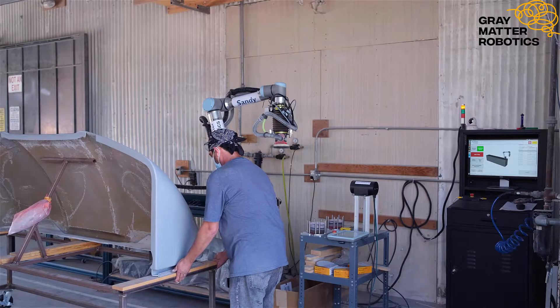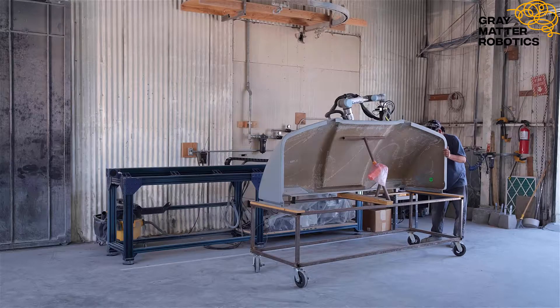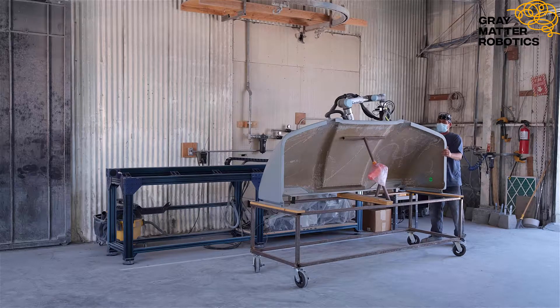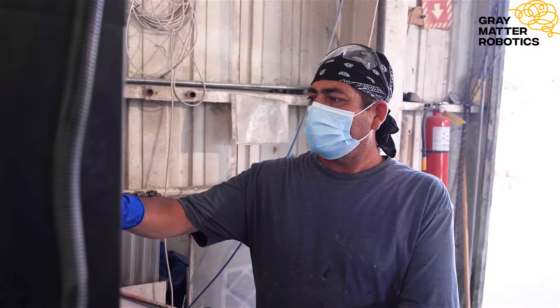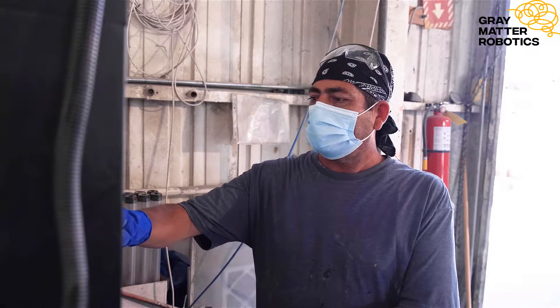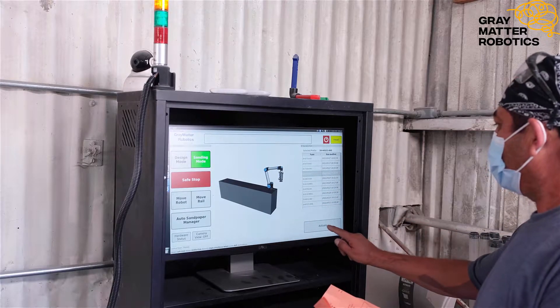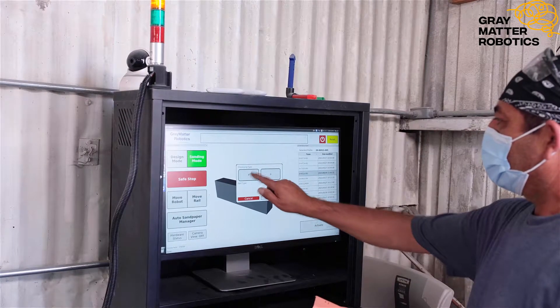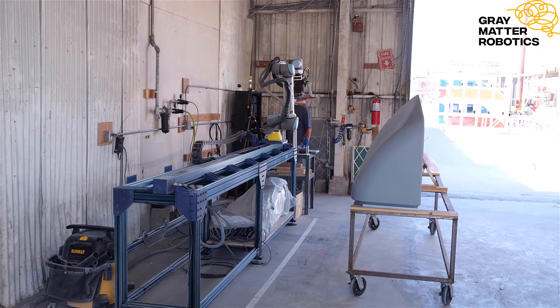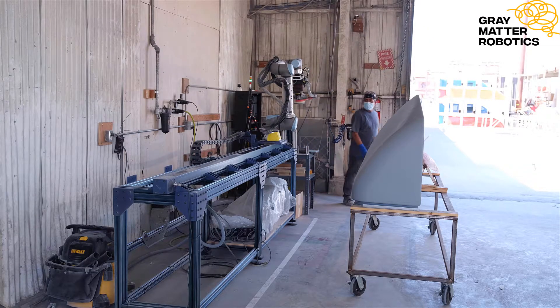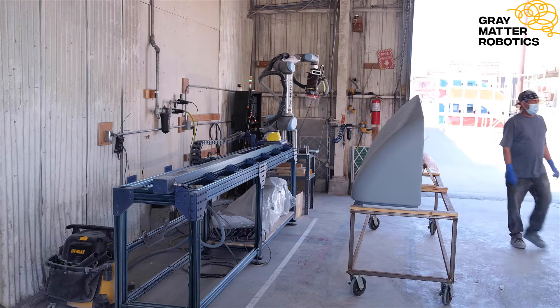Gray Matter Robotics has a smart robotic sanding solution that does not require programming. It is very easy to configure and rapidly deployable in high mix applications. Here is a video of their scan and sand solution being used in production by a fiberglass part manufacturer.